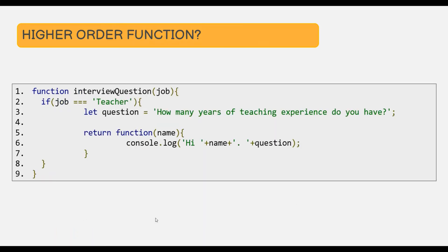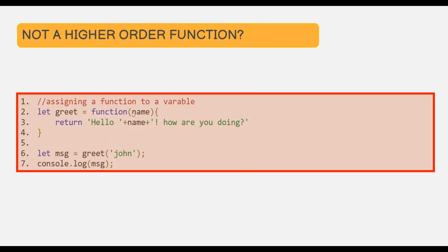In this example, from the interviewQuestion function we are returning another function — an anonymous function. When a function returns another function from within itself, that is also a higher order function. So interviewQuestion is a higher order function because it is returning a function. A function is a higher order function only when it takes a function as its argument, returns a function from within itself, or does both.